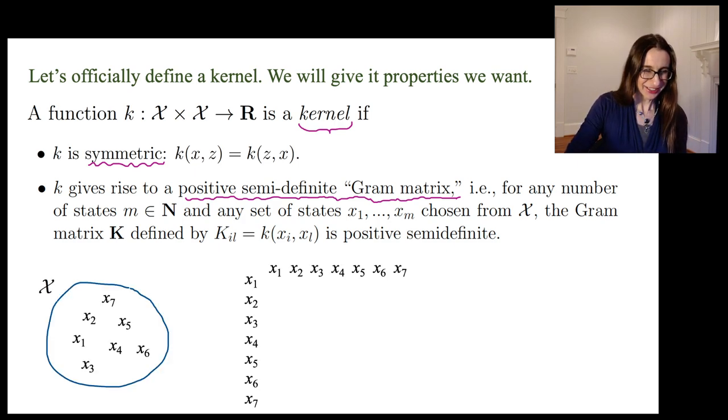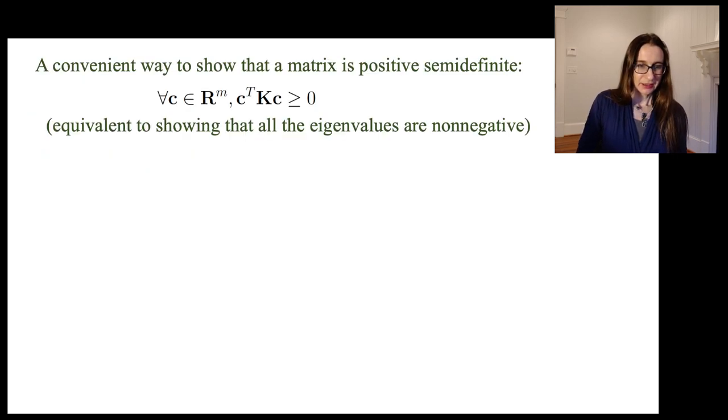A convenient way to show that a matrix is positive semi-definite is that for any vector c ∈ Rᵐ, cᵀKc ≥ 0, which is equivalent to showing that all the eigenvalues are nonnegative. This is actually completely equivalent to the definition I gave earlier, which is that all of the eigenvalues are non-negative. If all the eigenvalues are non-negative, that means for any c, I can do this product, and it's non-negative.